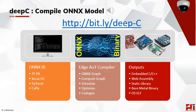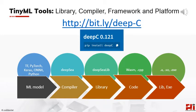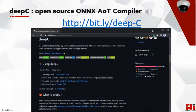One can compile ONNX models with DeepC. DeepC is an open source, vendor-independent deep learning library, compiler, and inference framework designed for small form factor devices including microcontrollers, IoT, and edge devices. It is available on GitHub at bit.ly/deep-C. DeepC takes an ONNX model as input, creates a compute graph to optimize and schedule ML operations, and finally generates code in embedded C, embedded C++, web assembly, static library, bare metal binary, and OS ELF.